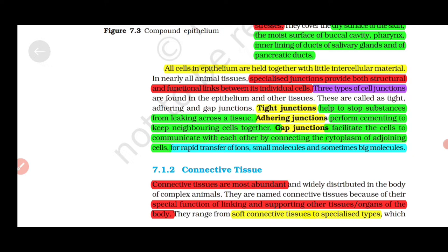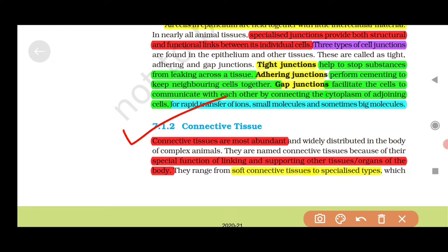All cells in epithelium are held together with little intercellular material. Specialized junctions provide both structural and functional links between individual cells. Three types of cell junctions: tight junctions help stop substances from leaking across tissue; adhering junctions perform cementing to keep neighboring cells together; gap junctions facilitate cells to communicate with each other by connecting cytoplasm of adjoining cells for rapid transfer of ions, small molecules, and sometimes big molecules.